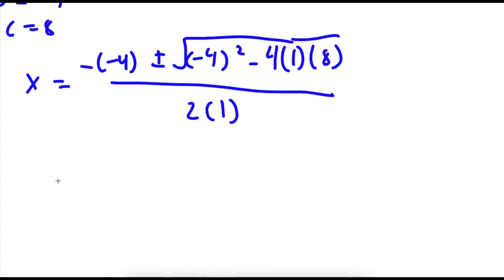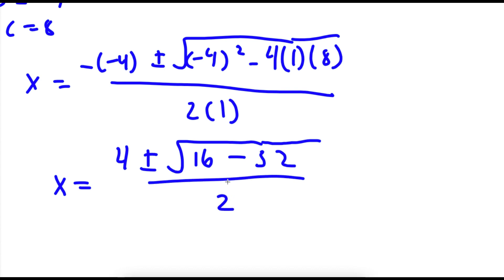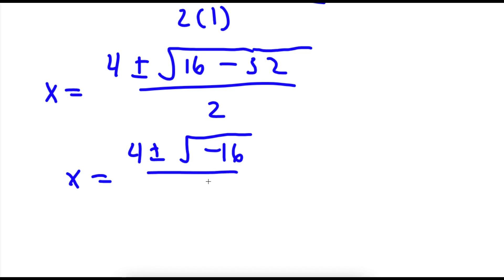This simplifies to x equals positive 4 plus or minus the square root of — negative 4 squared is positive 16 — minus 4 times 1 is 4, and 4 times 8 is 32. So I have 16 minus 32, which is negative 16, over 2. So x equals 4 plus or minus the square root of negative 16, over 2.